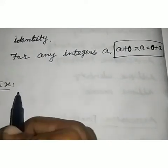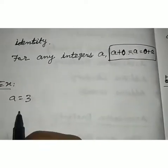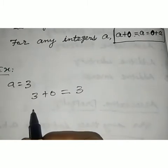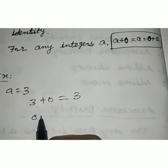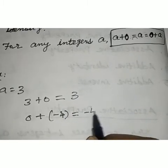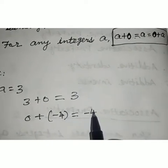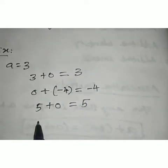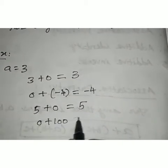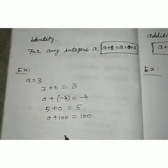For example, a equal to 3: 3 plus 0 equals 3. And 0 plus (minus 4) equals minus 4 — the same number. Another example: 5 plus 0 equals 5, and 0 plus 100 equals 100. When we add any integer with 0, we get the same number.